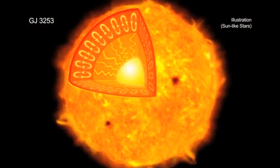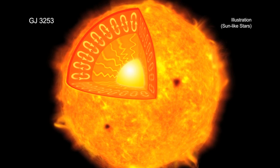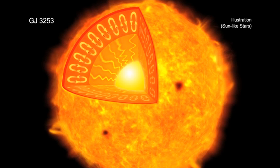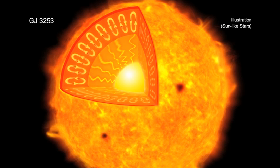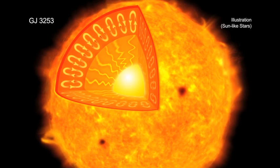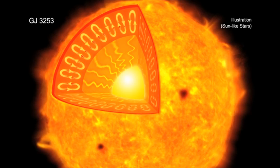This is surprising because the sun and sun-like stars have different regions within them where energy flows differently. Astronomers have thought the boundary between these different regions would contribute to the strength of the magnetic fields.